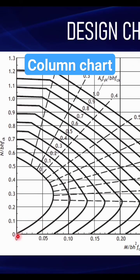When we look at this chart, you can see that we have two axes: the vertical axis and the horizontal axis. The vertical axis denotes N/bhfck, where N is